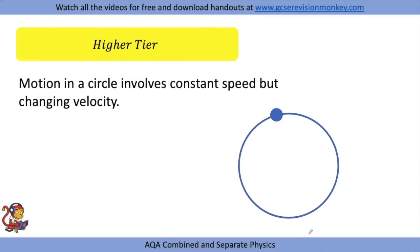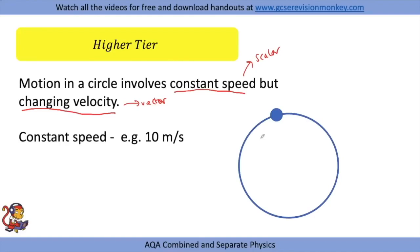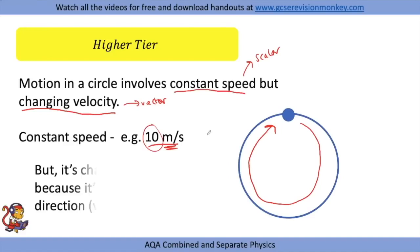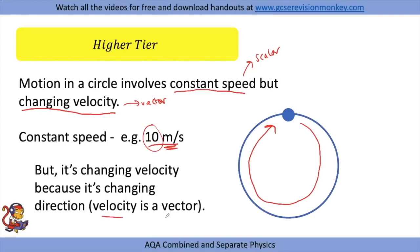For higher tier: motion in a circle involves constant speed but changing velocity. Speed is scalar (magnitude only), while velocity is a vector. A ball travelling at 10 m/s around a circle has constant speed, but its velocity is always changing because the direction changes continuously as it moves around the circle.